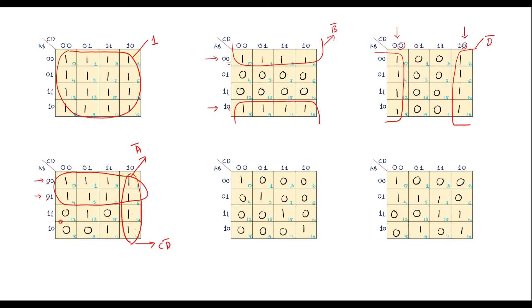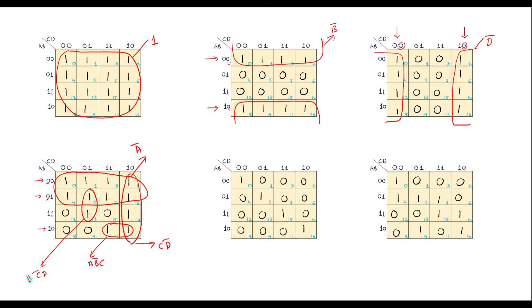Looking at remaining 1s: one pair of 1s belongs to row A B-bar, and the common column factor is 1 corresponding to C, giving term A B-bar C. Another pair belongs to columns C-bar D, and between those two rows the common factor is 1 corresponding to B, giving term B C-bar D.